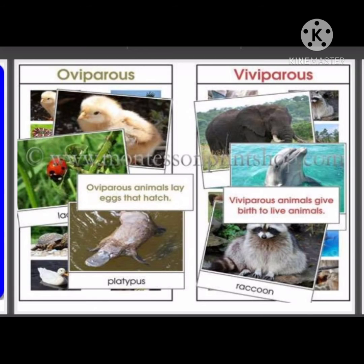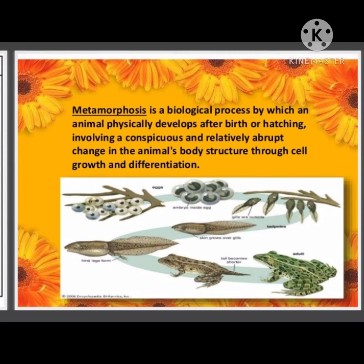Next, we are going to study another important term — that is about young ones becoming adults. Normally, just after birth, the young ones of all kinds of organisms start to grow. The young ones of most animals look the same as their parents. But in some animals, the young ones may look very different from the adults.